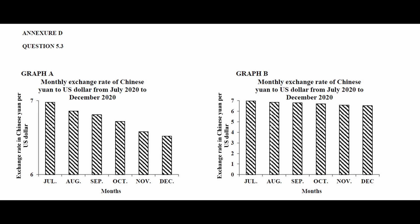Analyzing the two graphs, graph A appears to show a sharp decline in the US dollar against the Chinese Yuan. The reason a Chinese person would use this graph is that it is clear to see that as the months go by, it costs less Chinese Yuan to buy one US dollar.